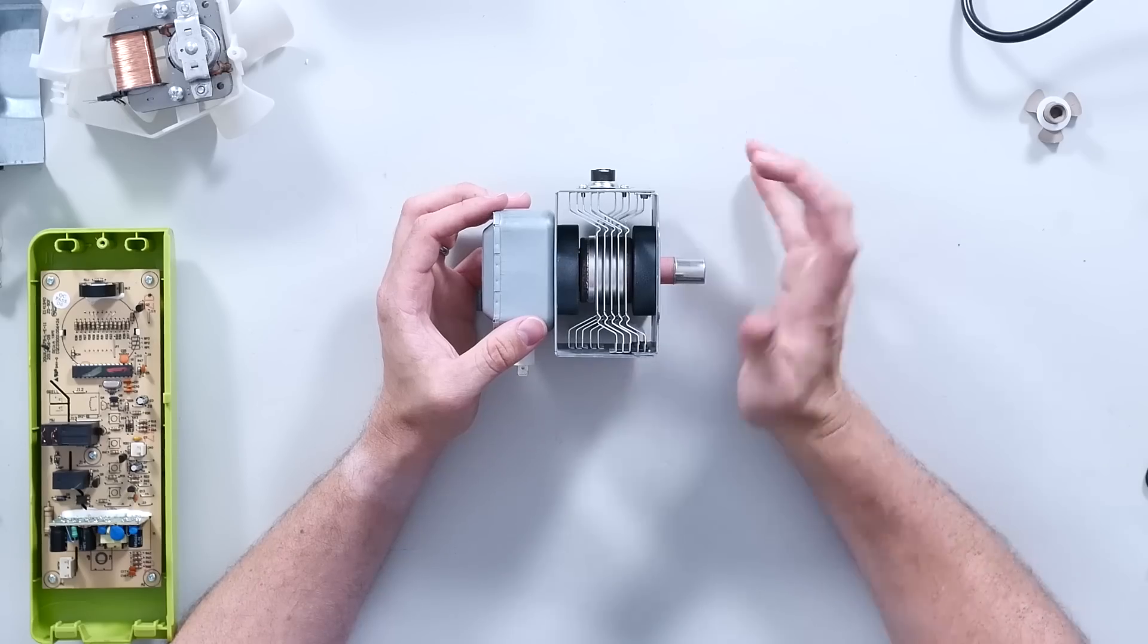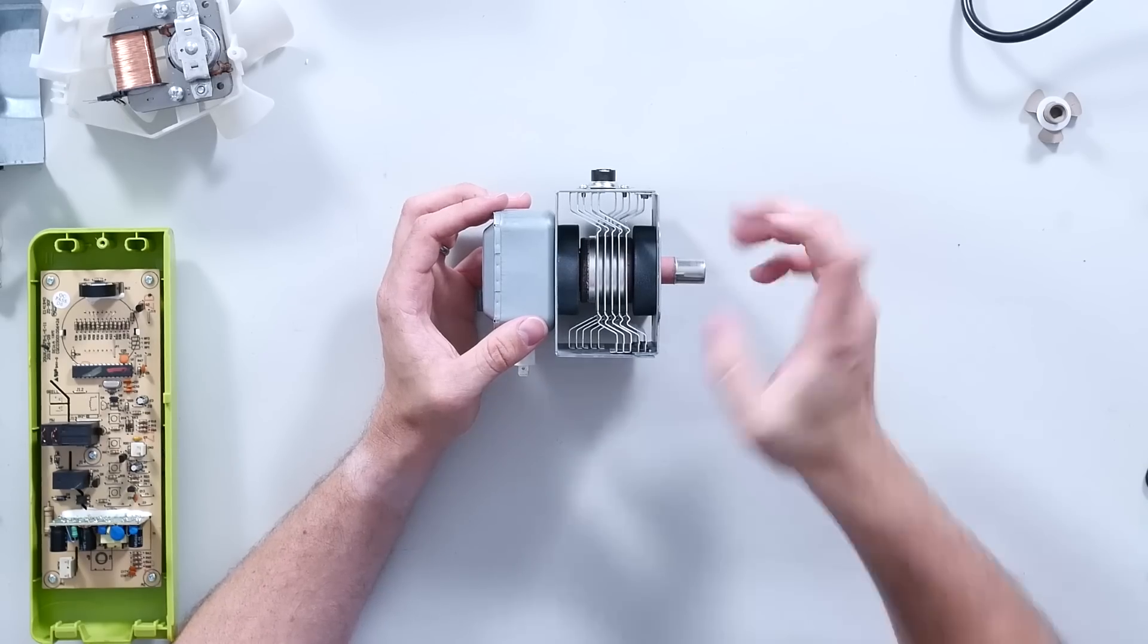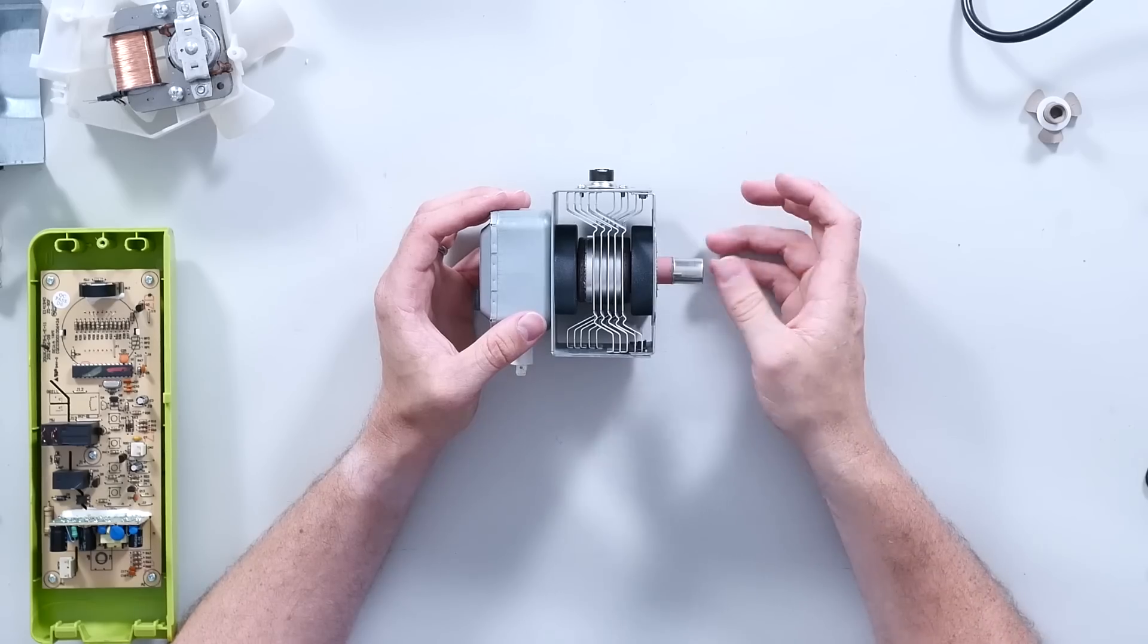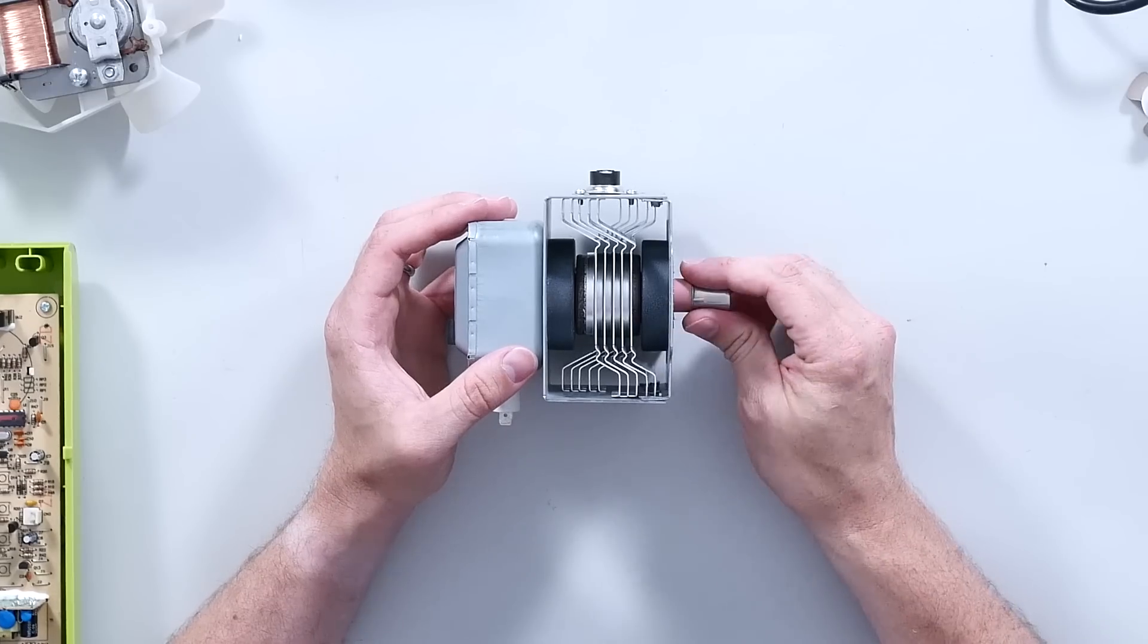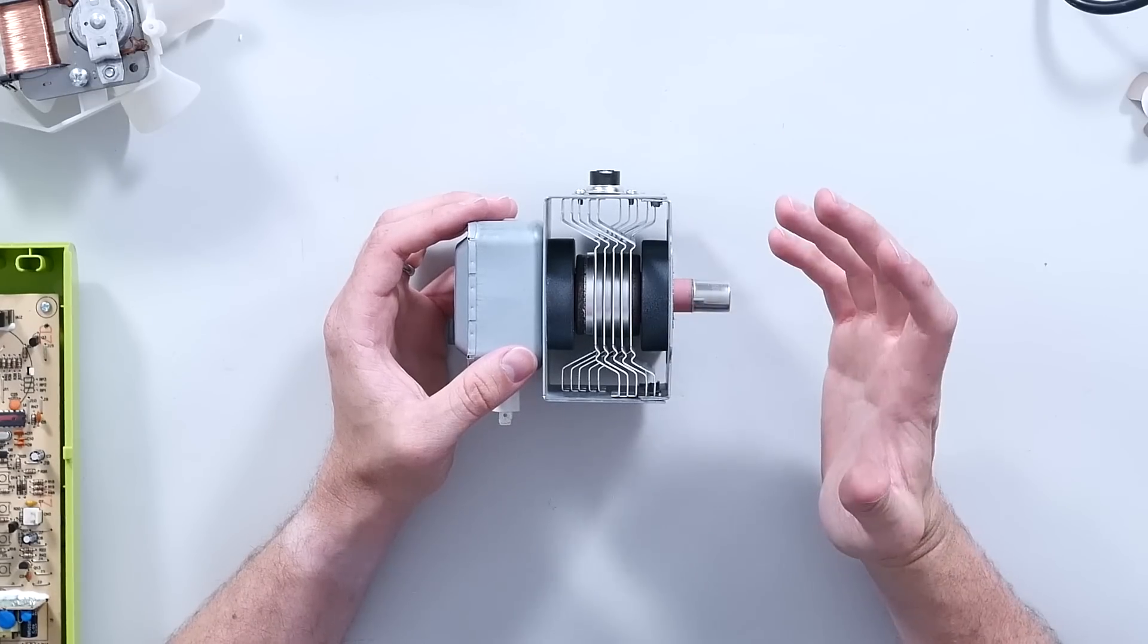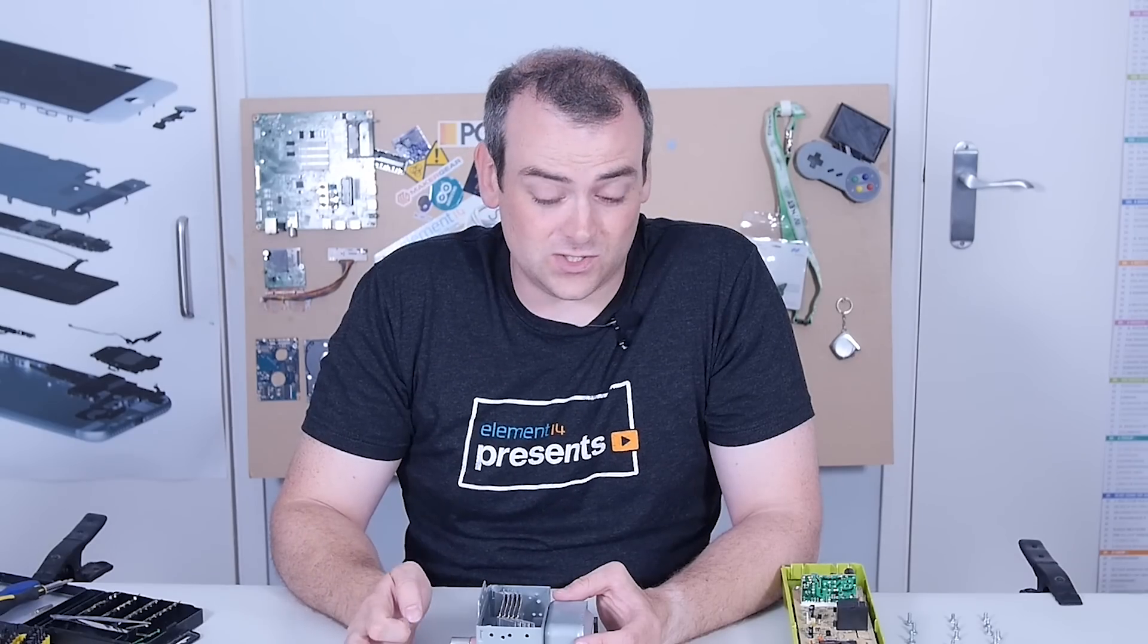So those videos that went around the internet a few years ago of people popping popcorn by putting phones around them on the table, never going to work. The power output of the Wi-Fi or the antenna on your phone or anything like that is limited by the law in your country. Typically that's going to be about 100 milliwatts. Now this is 800 watts of radio power output.